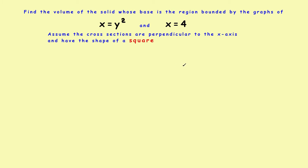This is the first video on how to find the volume of a solid using cross-sectional areas. For most students, you've just finished finding volumes of revolution using the disk method. This is similar, but rather than being restricted to circular sections, you can use sections of any geometric shape. It's a more general method, but it shares some characteristics of the disk method.